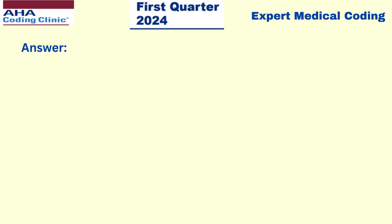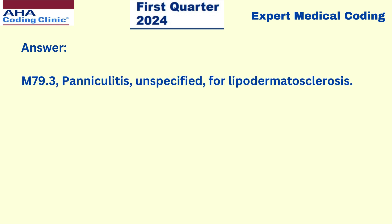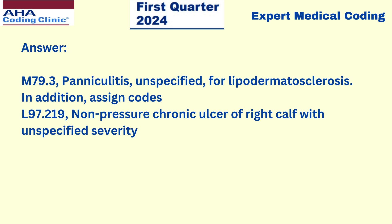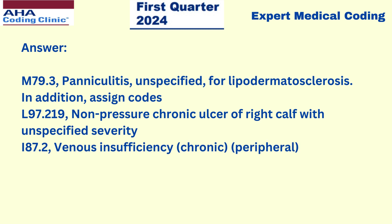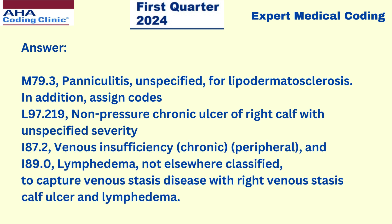The answer is we have to assign four codes in this scenario. The first is M79.3, panniculitis unspecified, for lipodermatosclerosis. In addition, assign code L97.219 for non-pressure chronic ulcer of right calf with unspecified severity, I87.2 for venous insufficiency, and I89.0 for lymphedema not elsewhere classified — to capture venous stasis disease with right venous stasis, calf ulcer, and lymphedema.